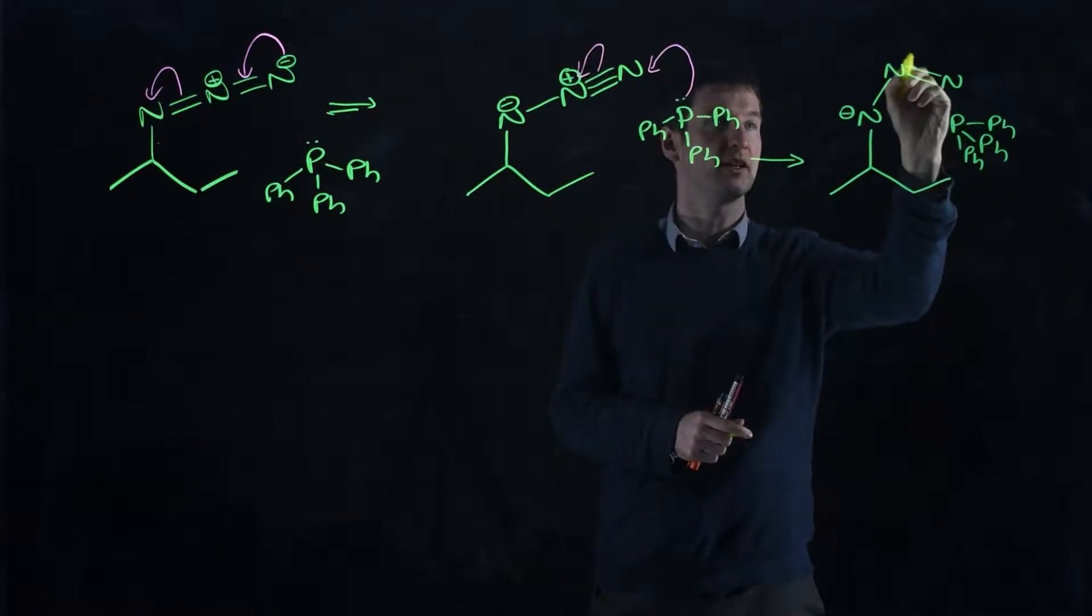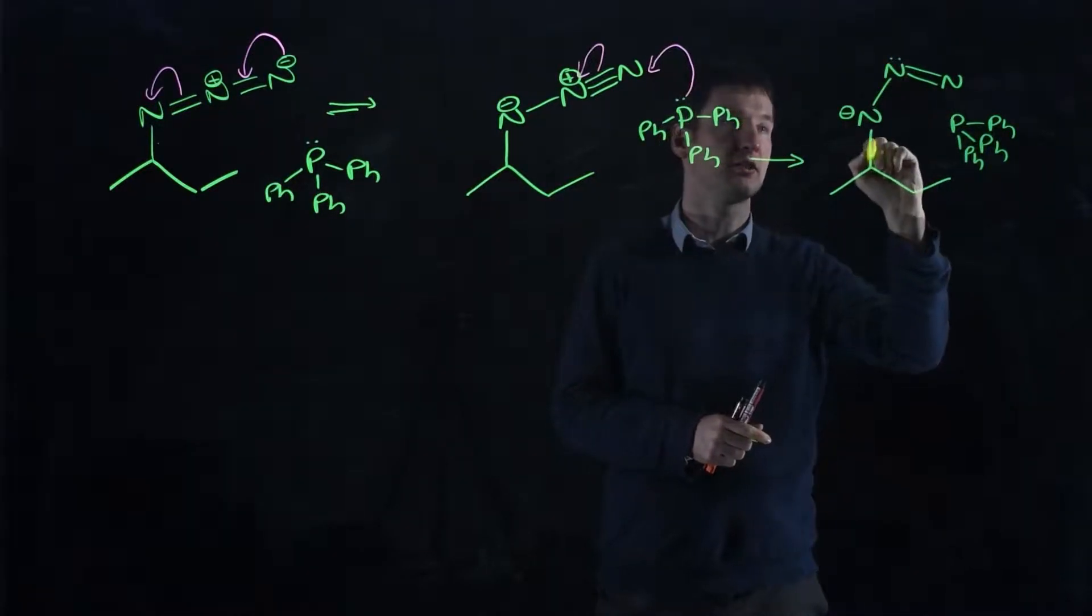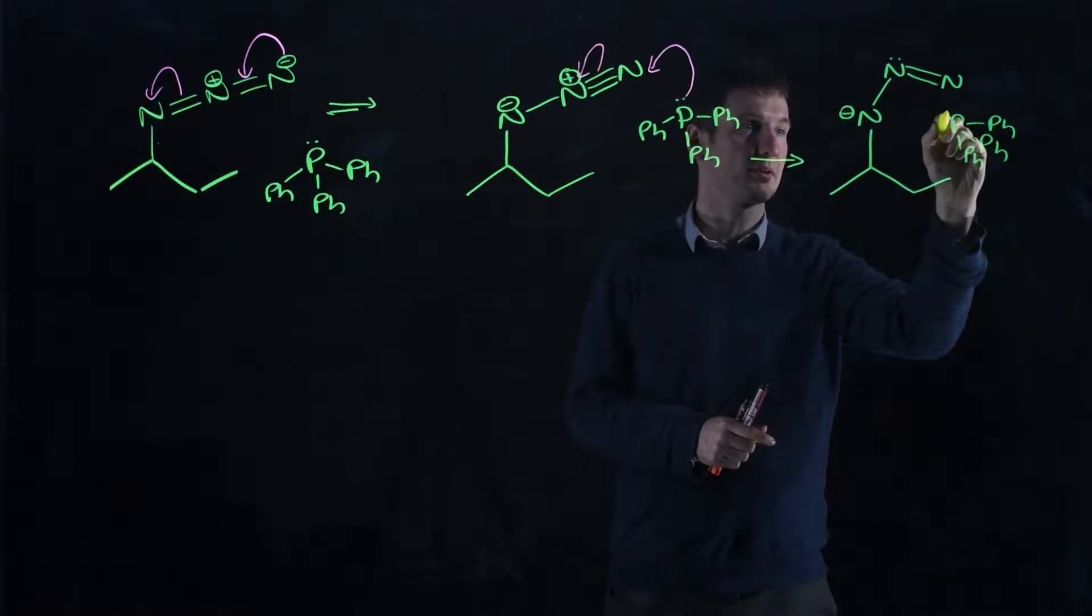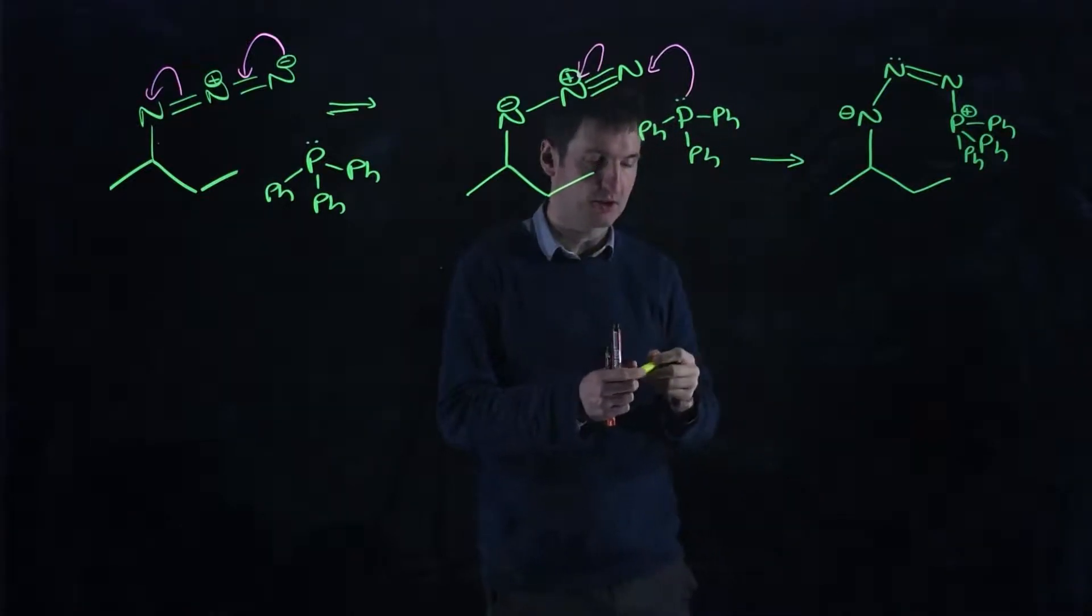So what do we do? We took that pair of electrons and made that neutral. That nitrogen has its lone pair back. And we took this pair of electrons and made a new nitrogen-phosphorus bond. Phosphorus now has a positive charge.